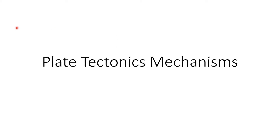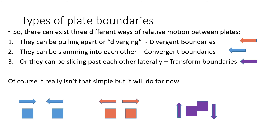The final piece of our mechanisms here is transform boundaries. We've talked about where plates might be pulling apart, making divergent boundaries, and where they're shoving together, making convergent boundaries. The other option is for plates to not be doing either of those, but to essentially be sliding past each other. That is the idea going on when we have a transform boundary.